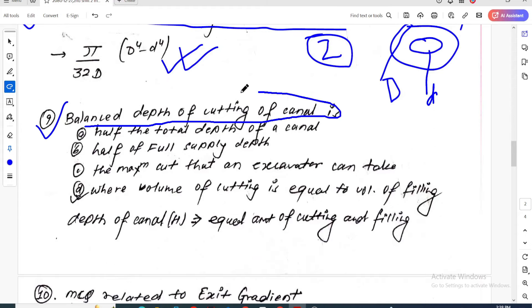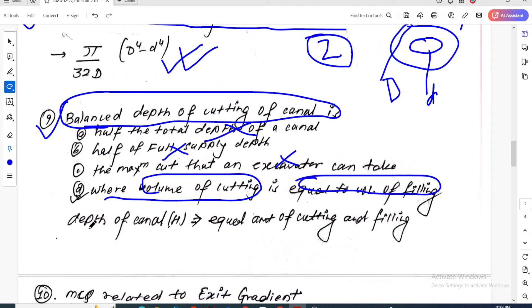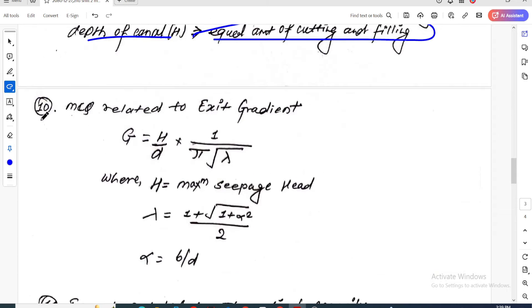Question nine: Balance depth of cutting of the canal. This irrigation-related question asks about half of the total depth of the canal. Balance depth means equal amount of cutting and filling, where the volume of cutting equals the volume of filling. The answer is option D.